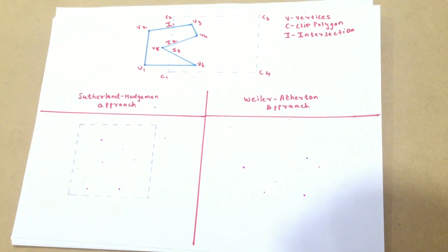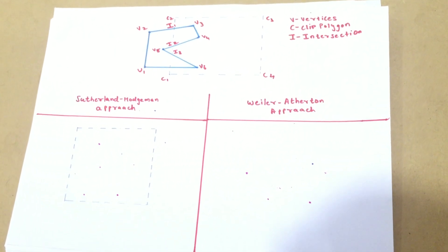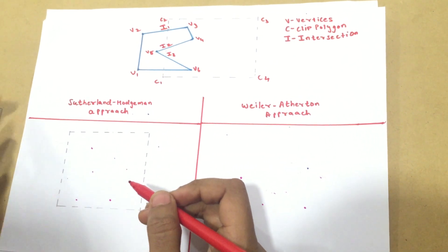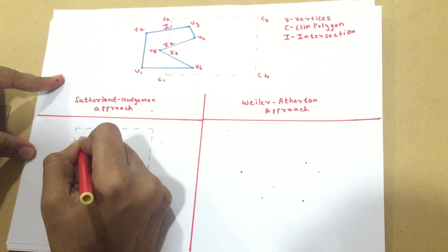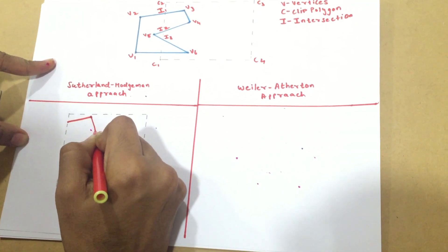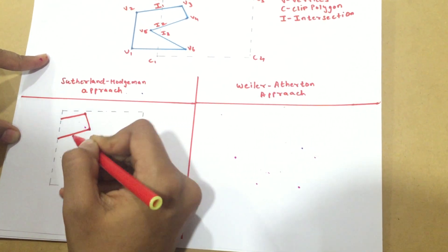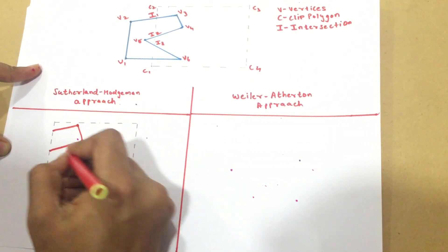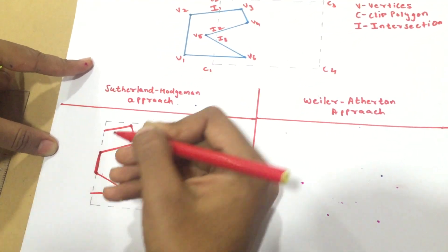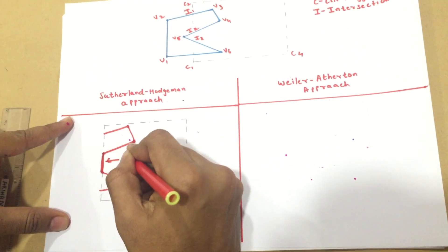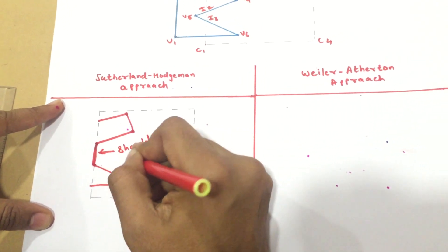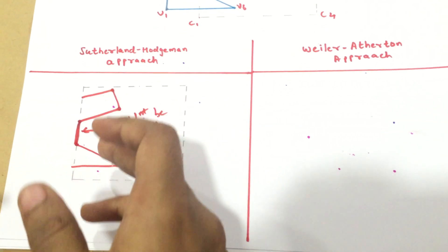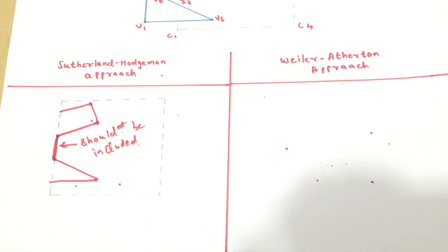If we use the Sutherland-Hodgman polygon clipping approach, the problem was, like I mentioned, that I was getting an extra line. So that extra line was this one — this shouldn't be included. Because this line then tells us that it is no longer a complete polygon, which is not how we wanted it to be clipped.